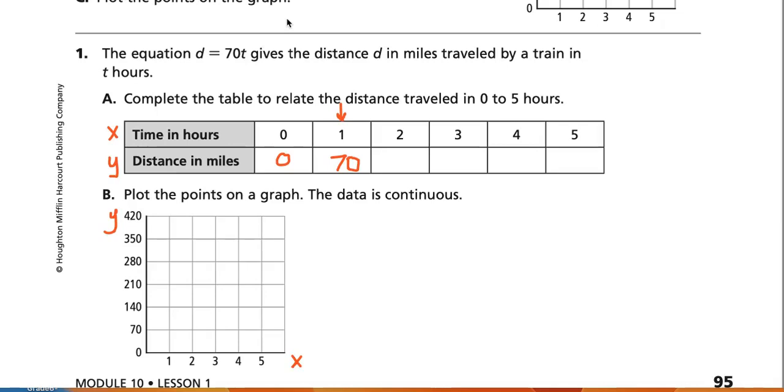Now if I travel two hours, I know that if I take my equation d equals 70t, and time is now two hours, I just multiply, this is multiplication here, 70 times two, which is 140.